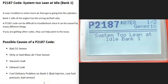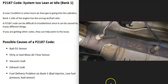Today I'm talking about a P2187 code — what it is and how you go about fixing it. A P2187 code is a system 2 lean at idle, bank one.